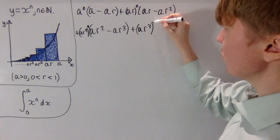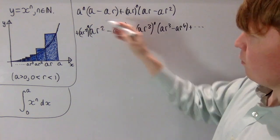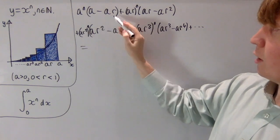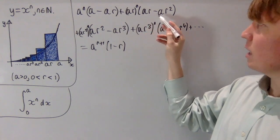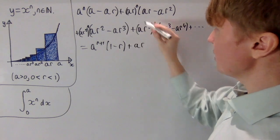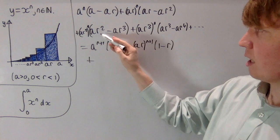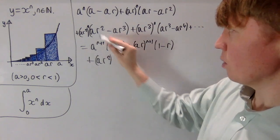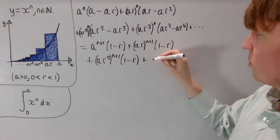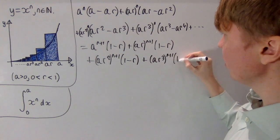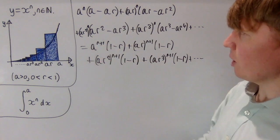A pattern emerges: AR cubed to the power of n is our height times the next width AR cubed minus AR to the four, and so on. Let's factor out common terms to tidy this up. We can take out a factor of A from the first bracket to get A to the power of n plus one, leaving one minus R. For the next term, taking out AR gives AR to the n plus one, again leaving one minus R. Continuing, we take out AR squared giving AR squared to the n plus one times one minus R, then AR cubed giving AR cubed to the n plus one times one minus R, and so on. So now you can see there's a factor of A to the power of n plus one and a factor of one minus R common to everything.